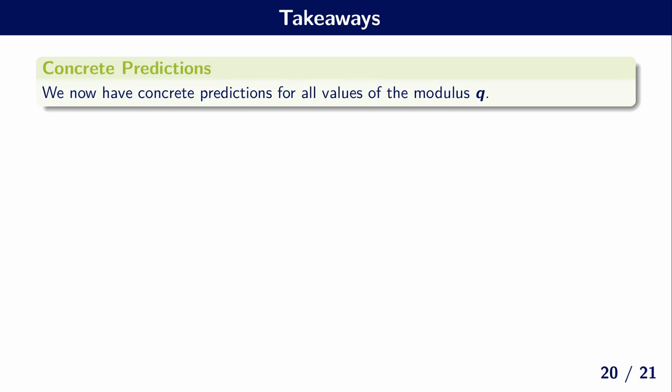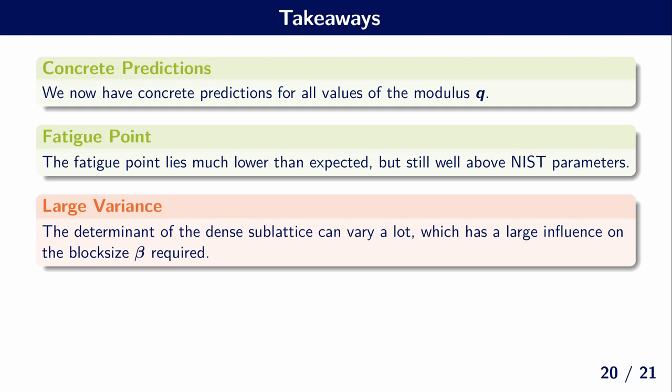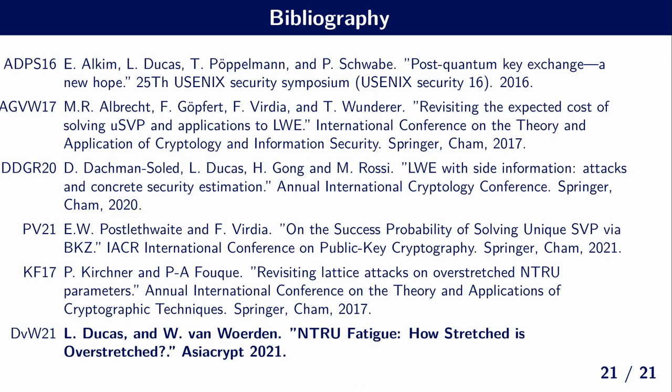The key takeaways: we can now give concrete predictions for all values of the modulus Q, both in the under-stretched and in the over-stretched regime. We now fully understand the fatigue point — while it lies much lower than expected, it still lies well above NIST parameters. You should be wary about the large variance in the volume of the dense sub-lattice, as this has a large influence on the required block size. The code for all experiments is available at the provided address. Thank you for watching this video.